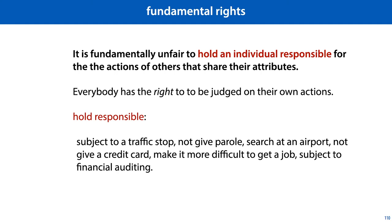While human dignity is often posed as a hard constraint — something that should never be violated — in many cases this cannot be reasonably achieved. For instance, any justice system faces the possibility of convicting innocent people for the crimes of others. The only way to avoid this is to convict no one, removing the justice system entirely. So we allow some violation of human dignity in order that we can punish the guilty. However, if we do have to suffer a certain probability that our dignity will be violated, we can at least ask that such violations are doled out uniformly.